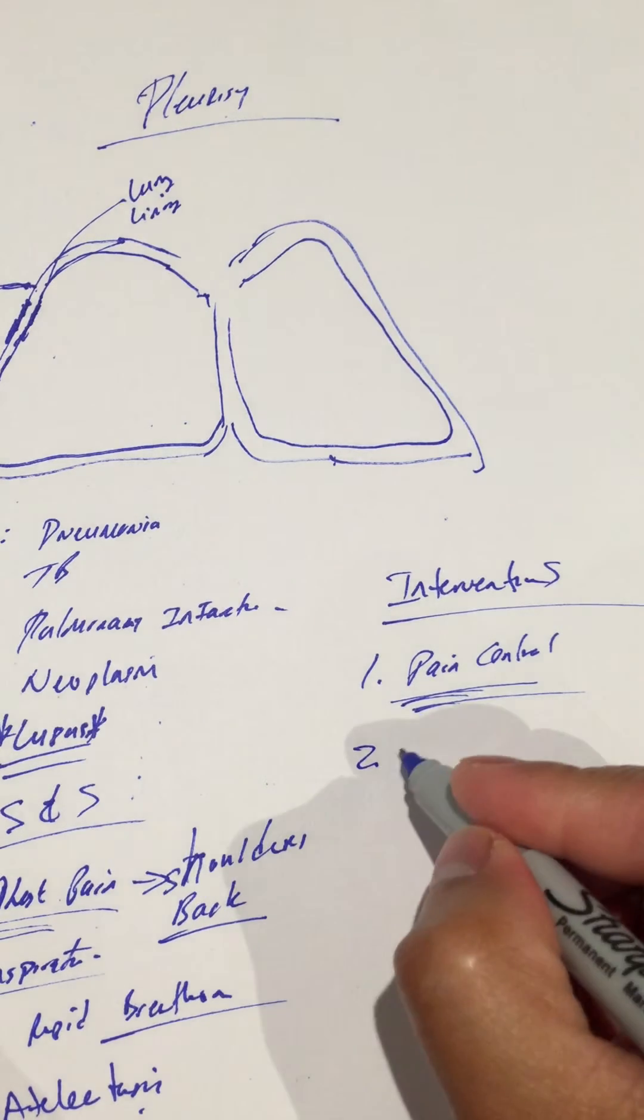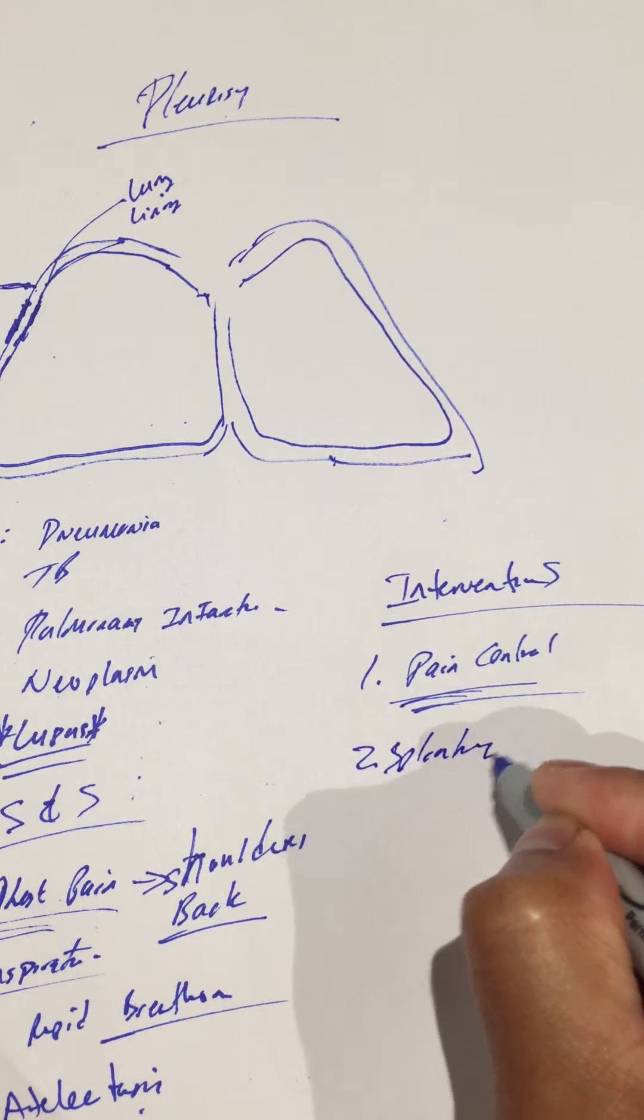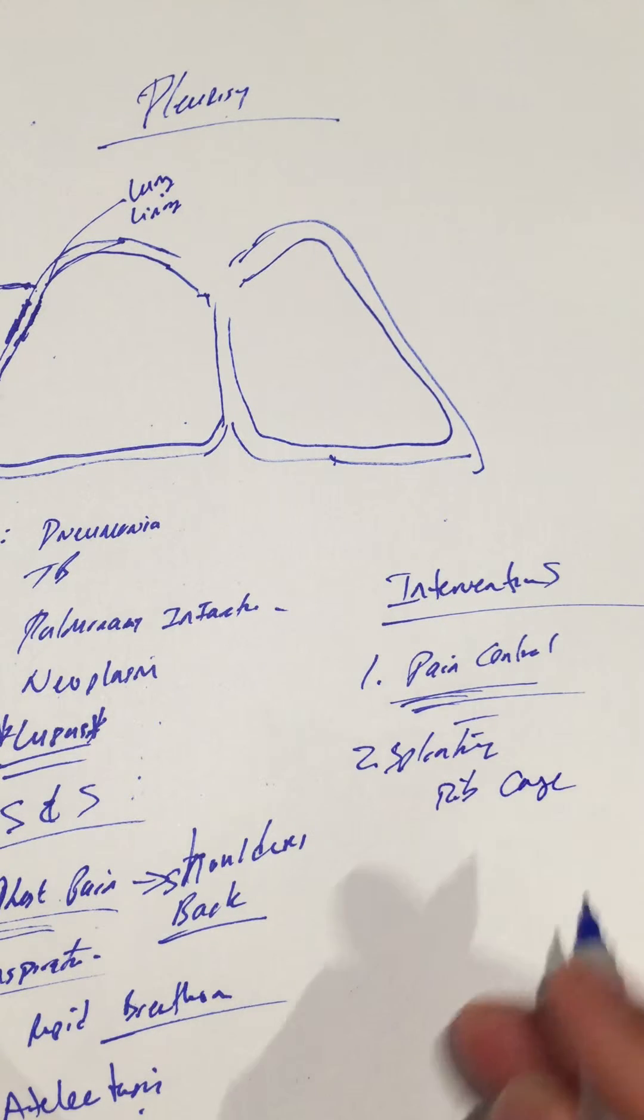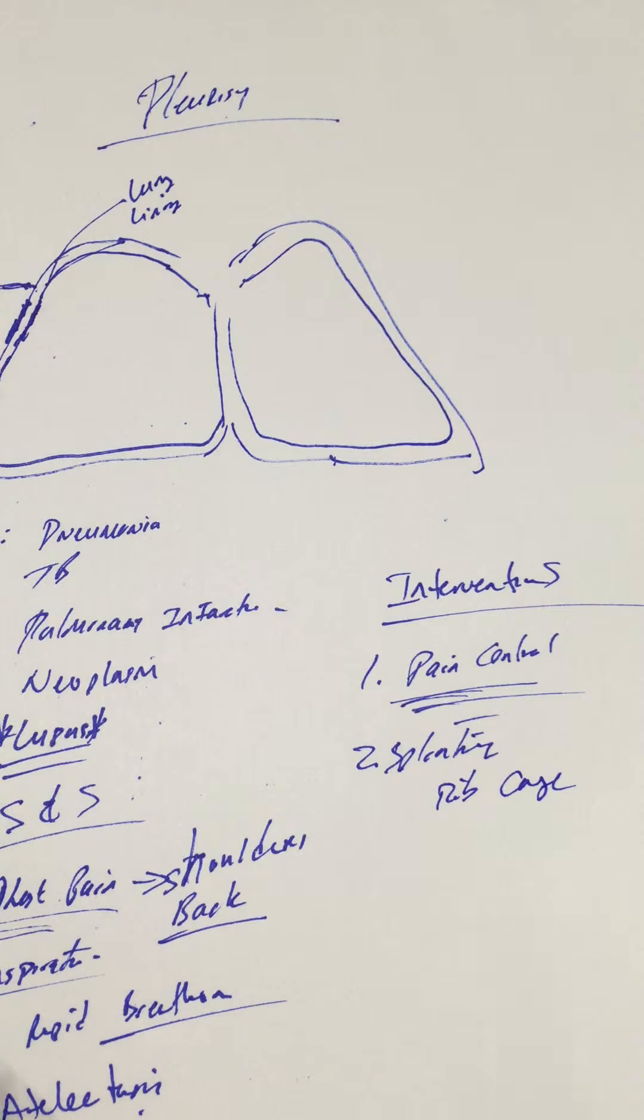Number two, you're going to educate your patient on splinting the rib cage. Anytime they cough, anytime they sneeze, again, that is in hopes of decreasing pain.